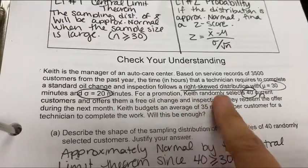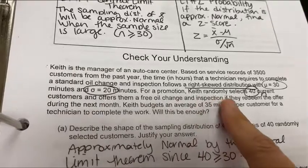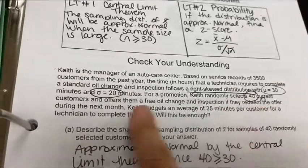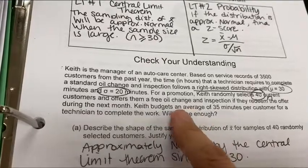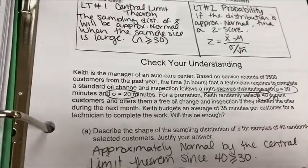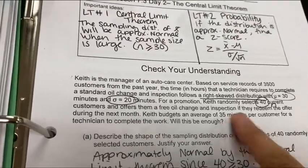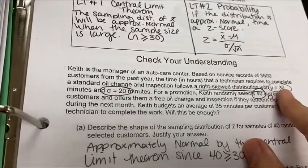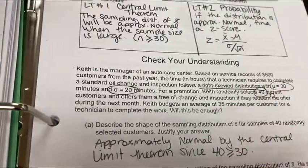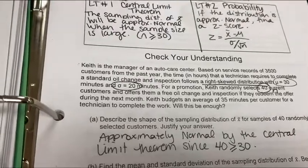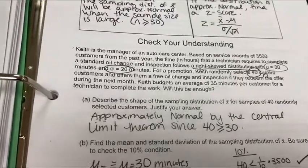So let's keep reading. For a promotion, he's randomly selecting only 40 customers and offering them a free oil change if they redeem the offer during the next month. His budget, he budgets an average of 35 minutes per customer. Will that be enough? So it sounds like it's going to be plenty enough time for the typical customer, but we also know that certain customers take longer. This would be a very useful question for anyone owning a business. So you can see why this is really useful in the real world.